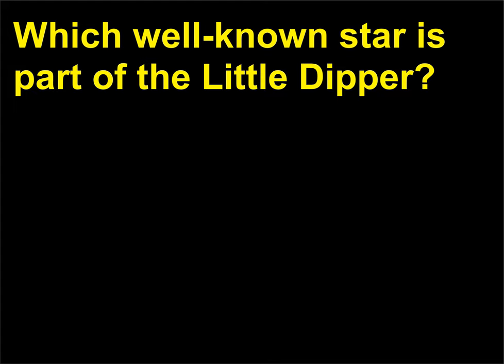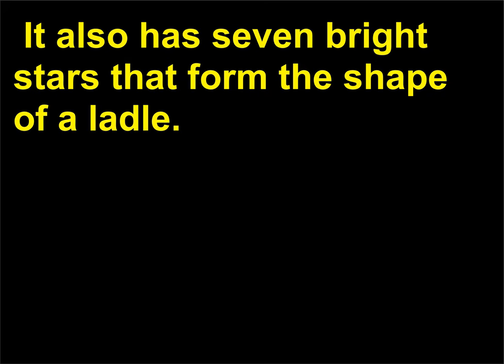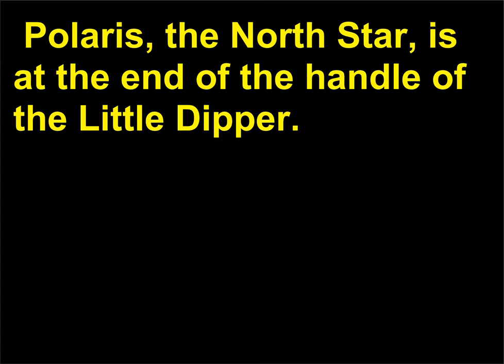Which well-known star is part of the Little Dipper? The Little Dipper, part of the constellation Ursa Minor, is similar to the Big Dipper. It also has seven bright stars that form the shape of a ladle. Polaris, the North Star, is at the end of the handle of the Little Dipper.